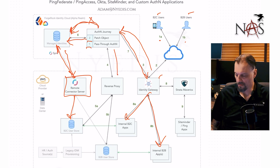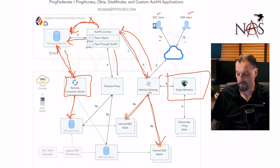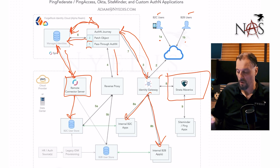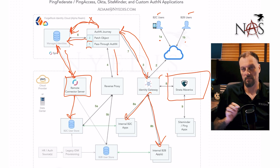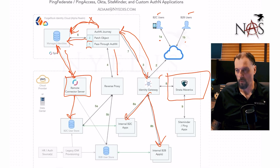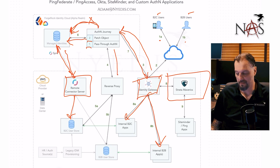In the diagram there's also a box for Strata Mavericks. This whole architecture was about moving away from legacy authentication and consolidating down to a single authentication source. This particular client has Okta, PingAccess, PingFed, SiteMinder, and some custom homegrown stuff — all to be consolidated into ForgeRock Identity Cloud. For Okta, you just replace the access gateways with the Identity Gateway — that's a fairly easy swap.